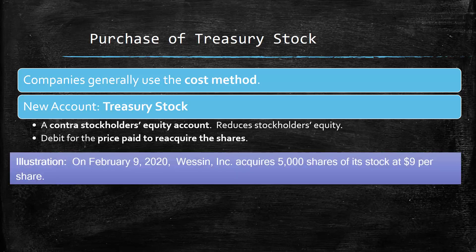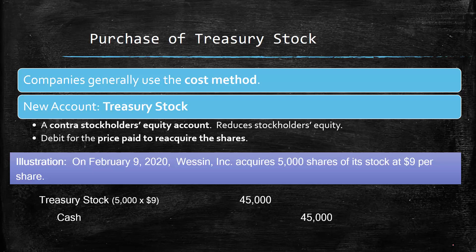So let's look at an example. On February 9, 2020, Wesson acquires 5,000 shares of stock at $9 per share. The $9 is the market price — they have to pay the market price in order to get the current shareholders to sell it to them. So they're going to debit treasury stock for $45,000 and credit cash, because they have to pay actual cash to the former shareholders.